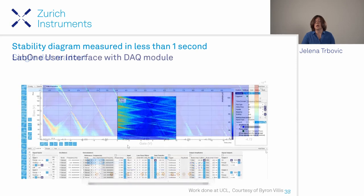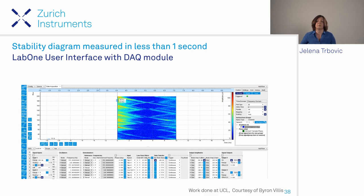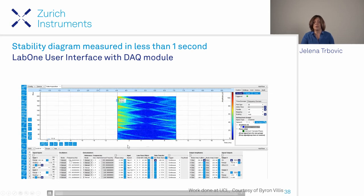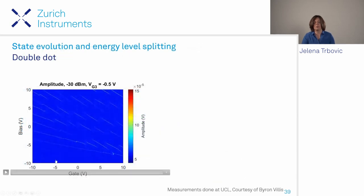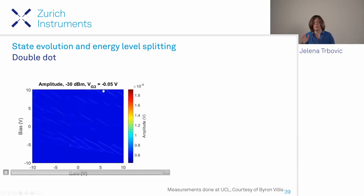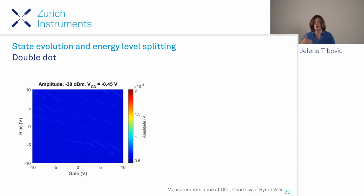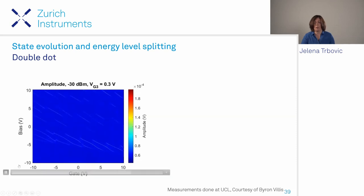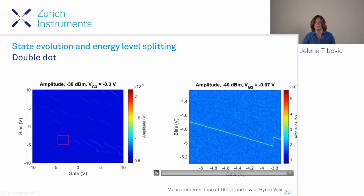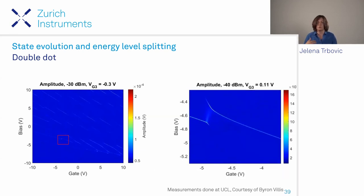A demonstration by Byron Willis at UCL shows the LabOne user interface with DAQ module measuring at 572 MHz, obtaining stability diagram points very rapidly—going from hours to less than a second. Collecting averaged images as a function of gate voltage shows energy levels moving, and we can focus on the two-dot levels used for the up and down qubit states.